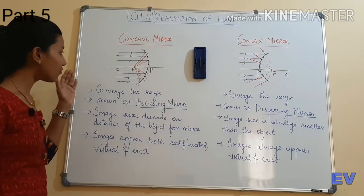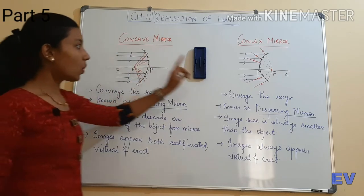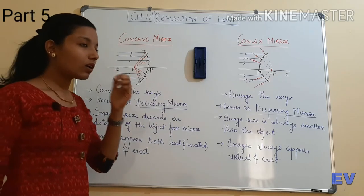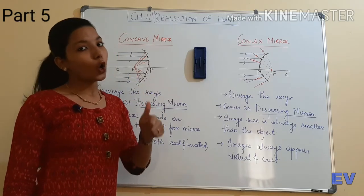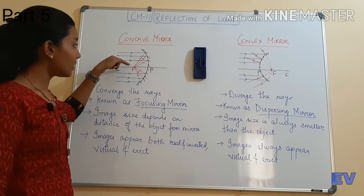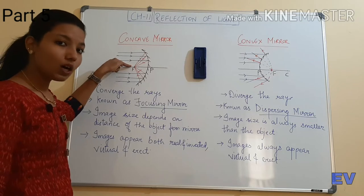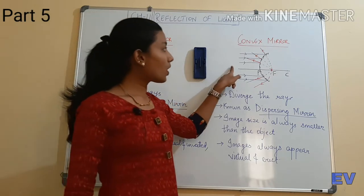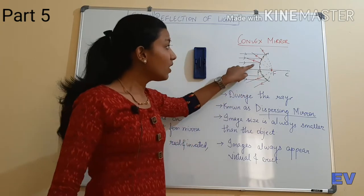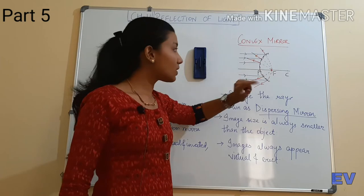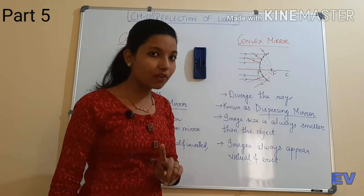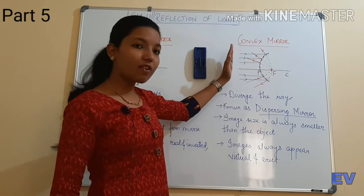You can see the concave mirror diagram and convex mirror diagram. Now, how many rules were there for concave mirrors? Parallel to the principal axis will reflect and pass through the focus. Same way with the convex mirror — parallel to the principal axis, the rays will pass through the focus. But since the convex mirror's outer surface is always reflecting, the object stays on that side.